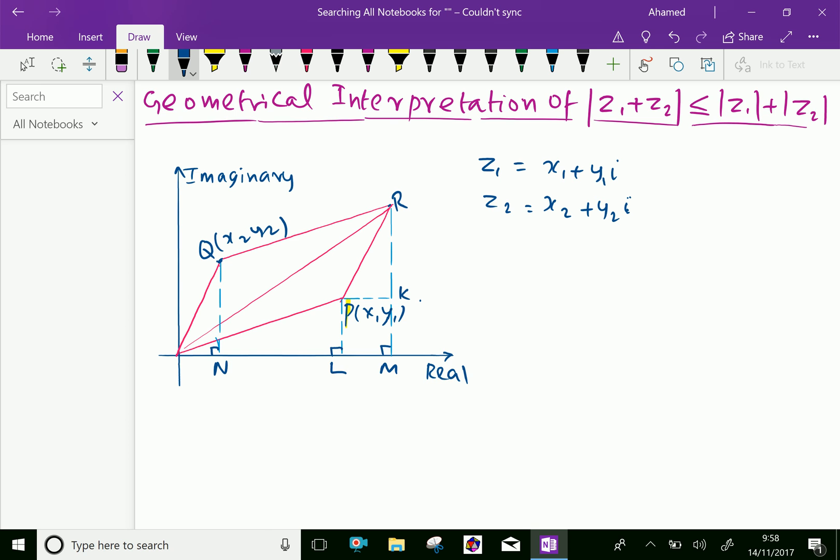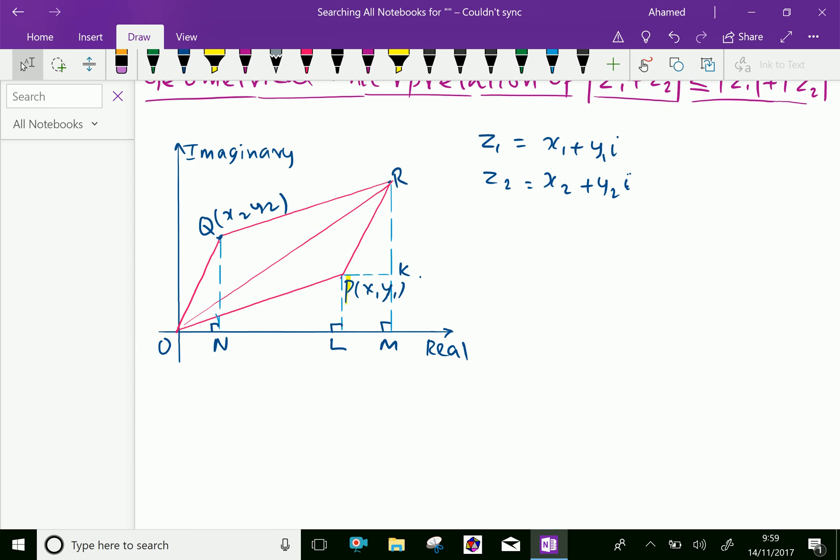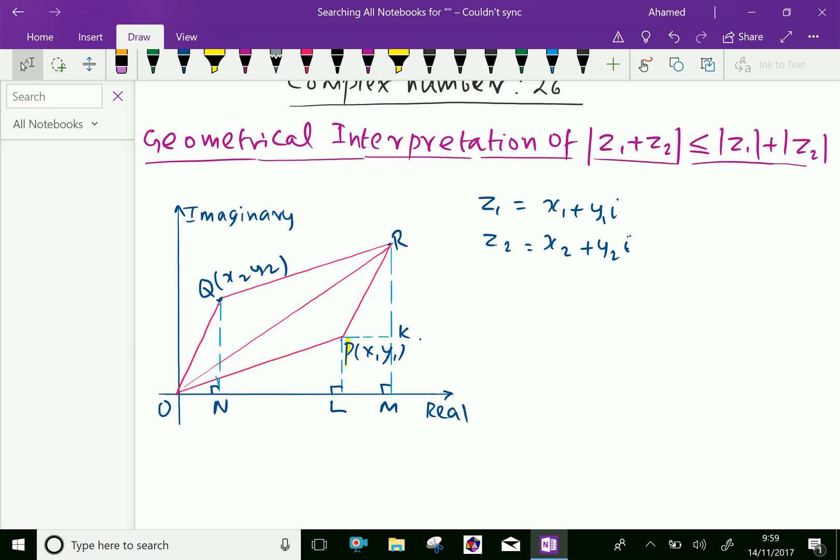Now, the lines OP and OQ represent complex numbers P and Q, where OR represents the complex number that is the addition of P and Q. We will prove that |z₁ + z₂| ≤ |z₁| + |z₂|.